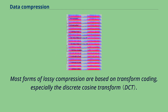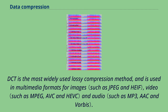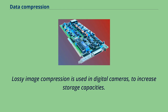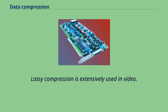Most forms of lossy compression are based on transform coding, especially the discrete cosine transform. It was first proposed in 1972 by Nasir Ahmed, who then developed a working algorithm with T. Natarajan and K. R. Rao in 1973, before introducing it in January 1974. DCT is the most widely used lossy compression method, and is used in multimedia formats for images, video, and audio. Lossy image compression is used in digital cameras to increase storage capacities. Similarly, DVDs, Blu-ray, and streaming video use lossy video coding formats. Lossy compression is extensively used in video.